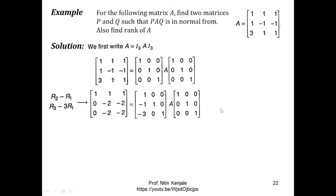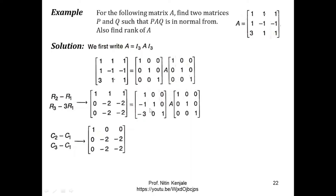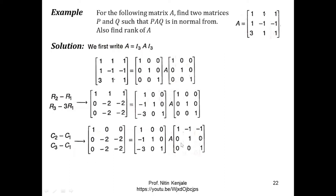Now we perform the column transformations C2 minus C1 and C3 minus C1 to reduce elements a(1,2) and a(1,3) to zero. Since these are column transformations, we perform them on the third matrix, keeping the first and second matrices as-is. C2 minus C1 gives minus 1, 1, and 0 in the second column. C3 minus C1 gives minus 1, 0, and 1 in the third column.